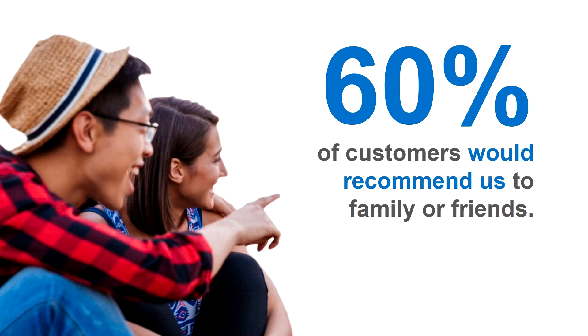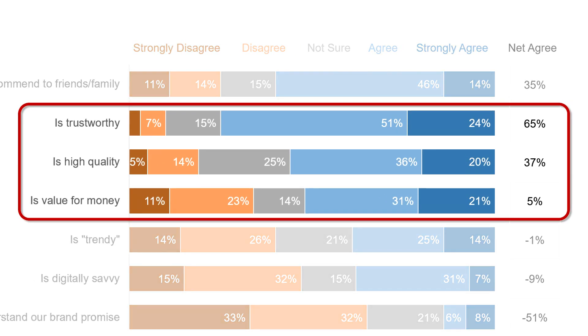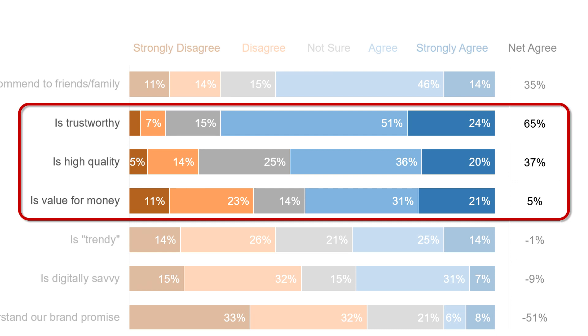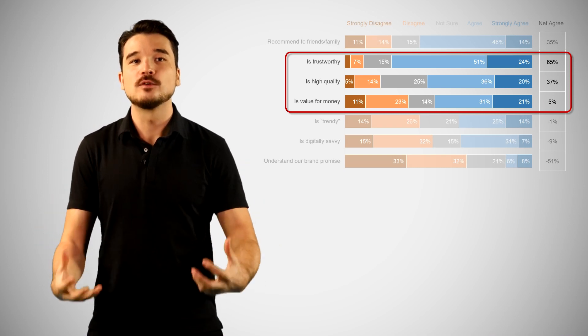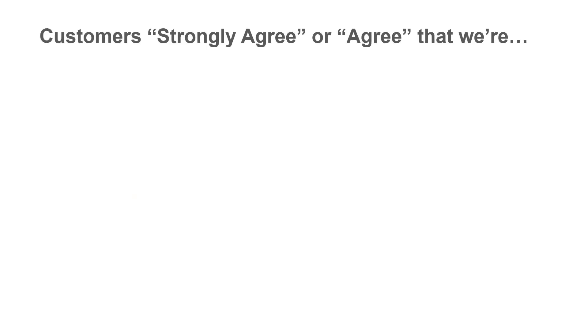We don't have to limit our impact metrics to one number per slide. A suite of multiple impact metrics can still be a simple and elegant alternative to a chart or table. For example, we might start our presentation with a single graphic impact metric showing our most important metric — the 60% of customers who would recommend us to a friend or family member. Then we ask our audience what's driving this positive result, and we emphasize the three areas where our brand is doing best: trustworthy, high quality, and value for money — and that these three positive areas contribute to our overall performance as a brand.